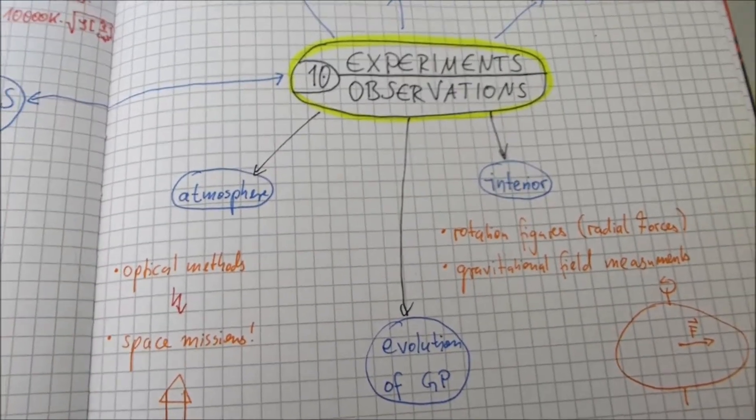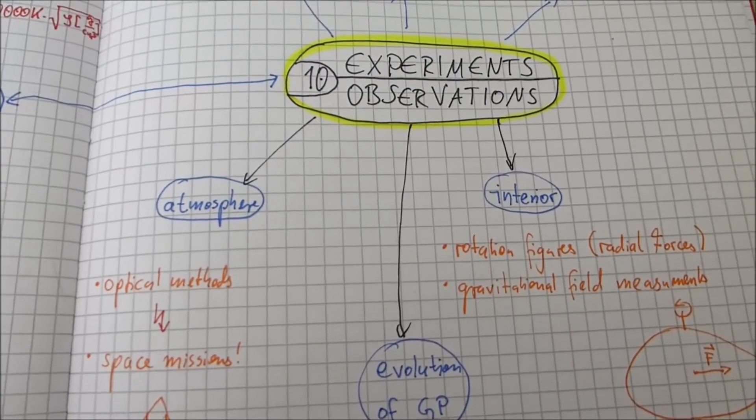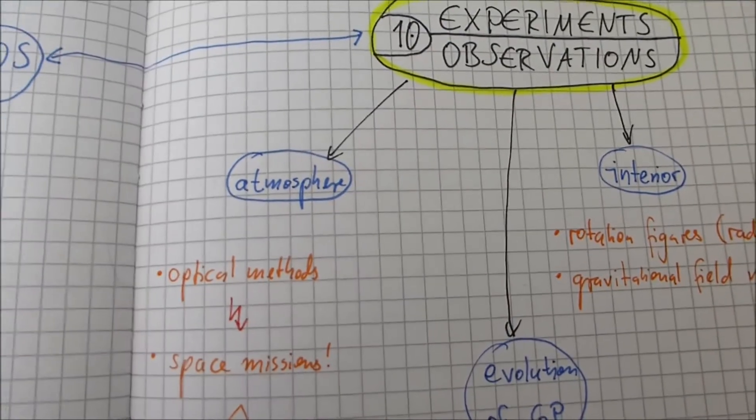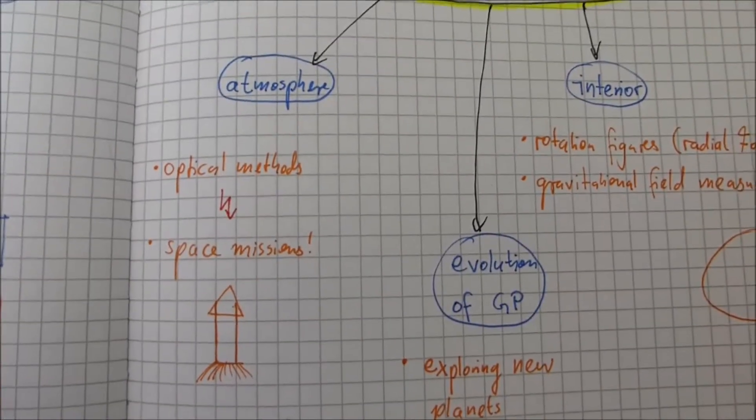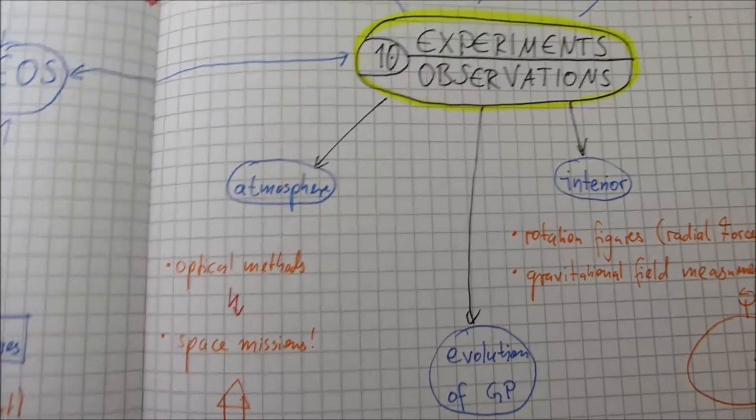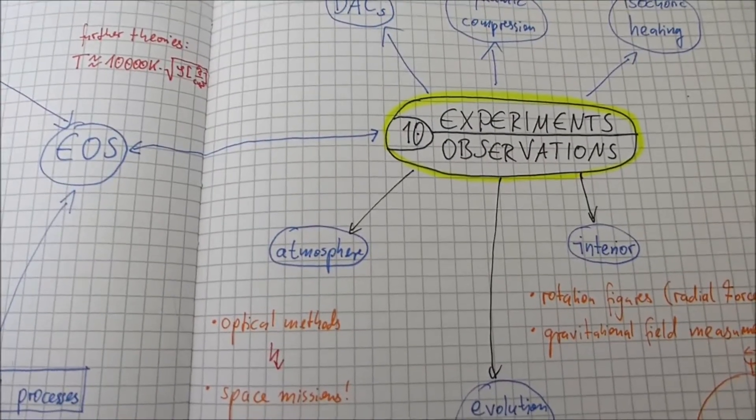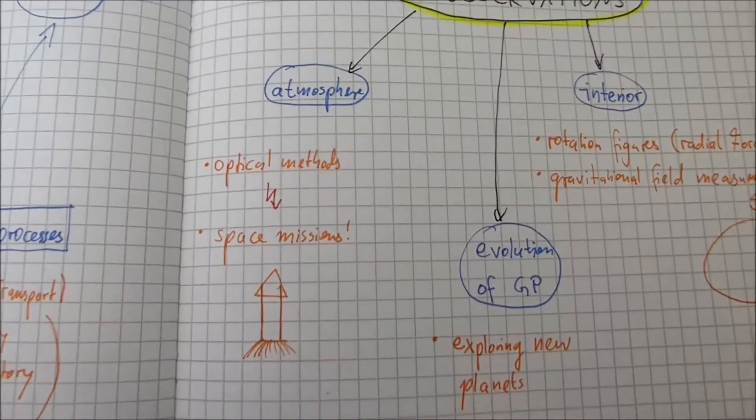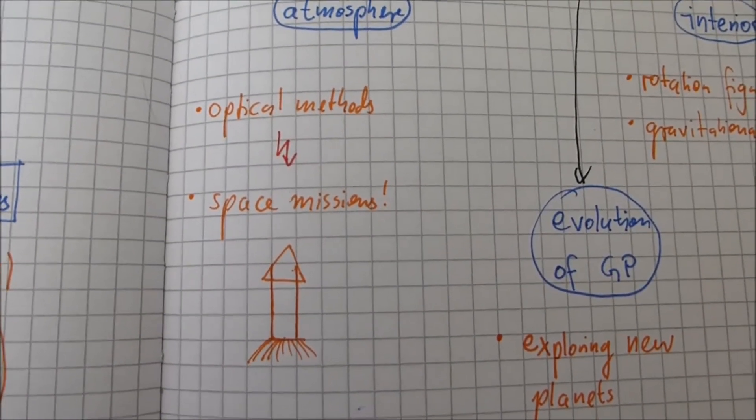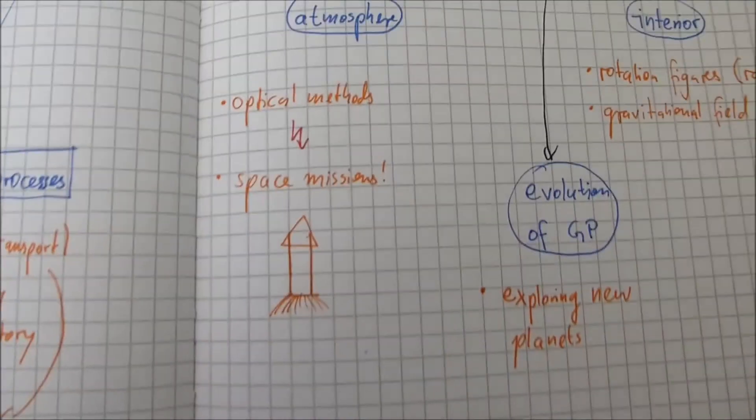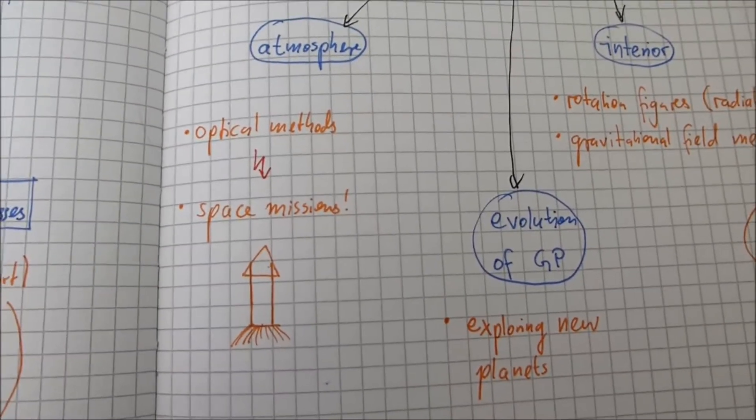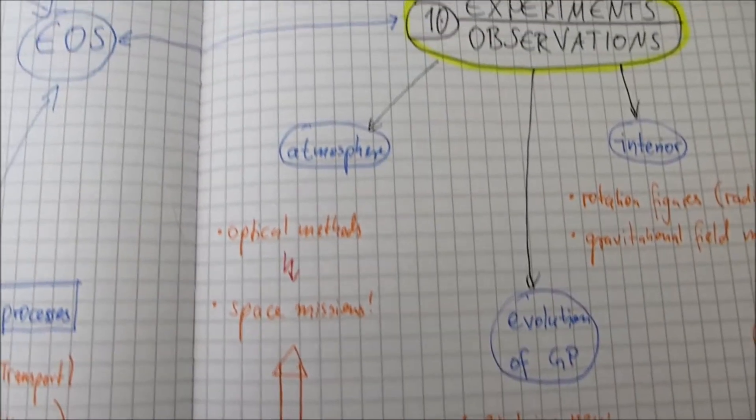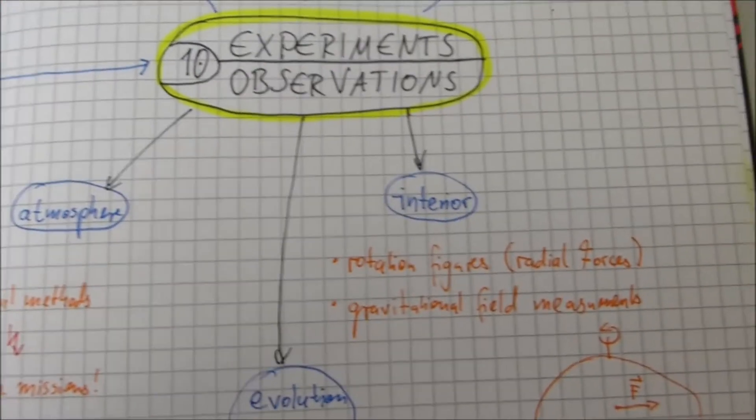A thing we didn't talk about so much was observations. And first, observations for the atmosphere. One can think that optical methods out of the earth, that we do some optical methods for the atmosphere would yield to a good result. But that's not so because of some physical reasons. So for the atmosphere, we need space missions to understand this atmosphere.